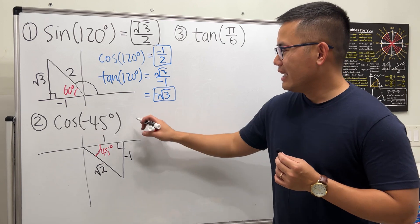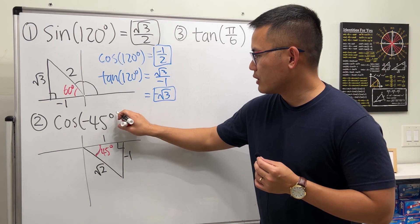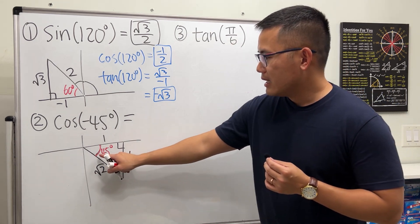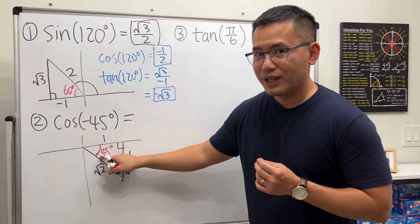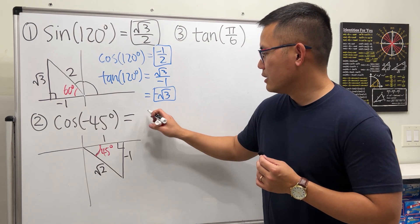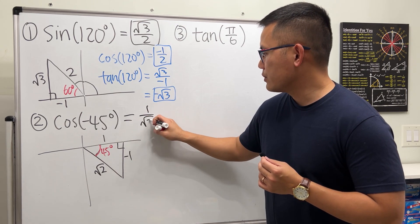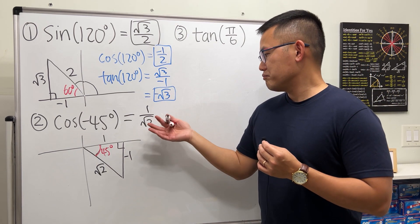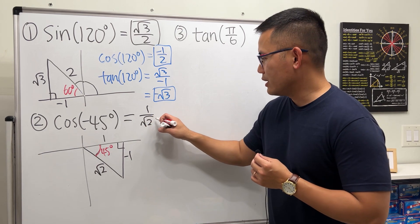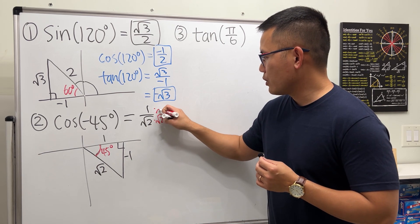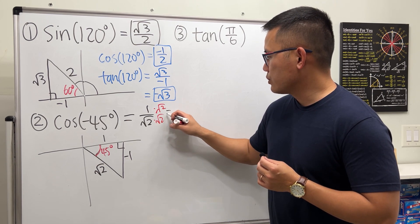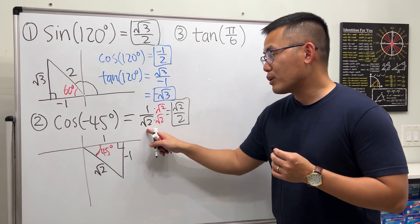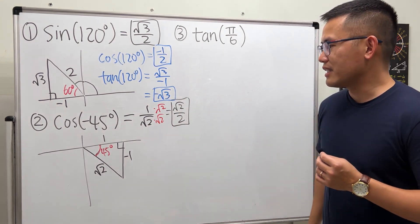The side going down has a negative y-value, so it's technically negative 1. Now cosine of negative 45 degrees — cosine is adjacent over hypotenuse — is 1 over √2. If your teacher doesn't want the radical on the bottom, multiply top and bottom by √2 to get √2 over 2. In calculus you can just leave the answer as 1 over √2.